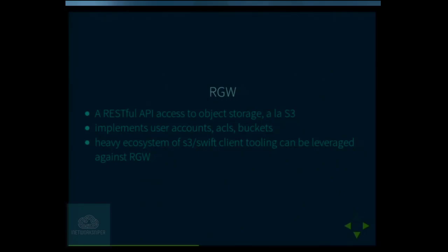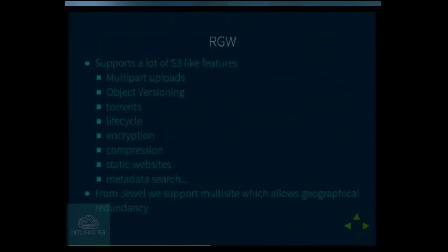Since there is already a heavy ecosystem of client tooling, we just reuse the S3 and Swift APIs and most clients are happy with that. We have concepts of user accounts, buckets, and ACLs similar to S3 and Swift. We support a lot of S3-like features and have cross-access between S3 and Swift, though some semantics differ. Features include multi-part uploads, object versioning, downloading objects as torrents, lifecycle policies to expire objects, encryption, compression support from the Luminous release, static website hosting, and now metadata search with Elasticsearch.